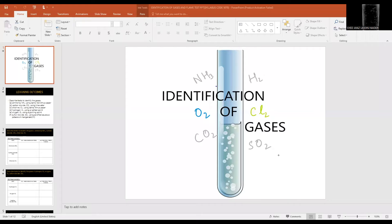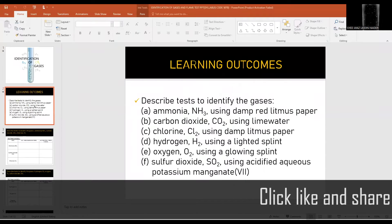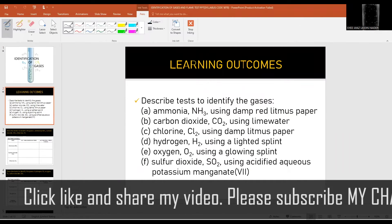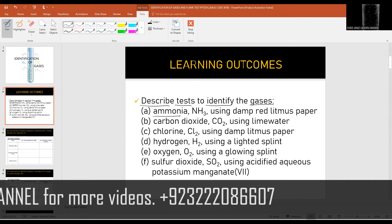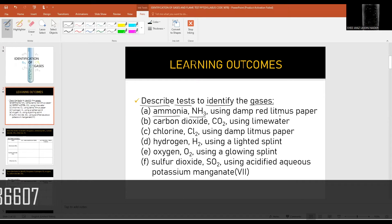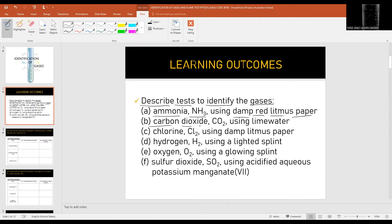First I will talk about identification of gases. The learning outcome for this video lesson is describe tests to identify the gases: ammonia NH3 using damp red litmus paper, carbon dioxide CO2 using lime water, chlorine Cl2 using damp litmus paper, hydrogen H2 using a lighted splint, oxygen O2 using a glowing splint, sulfur dioxide SO2 using acidified aqueous potassium manganate(VII).